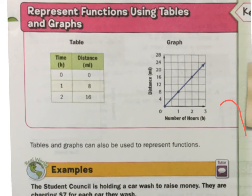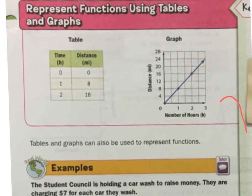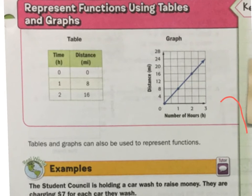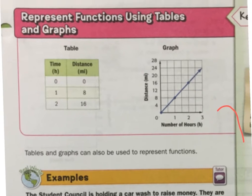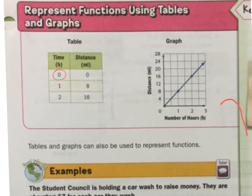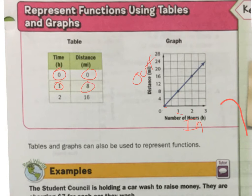Now let's represent functions using tables and graphs. If we have 0 hours, the distance is going to be 0 — that's my input and output. If I have 1 hour, then I have 8 for the distance — that point is right there. And 2 gives 16. Let's move down and look at some examples.